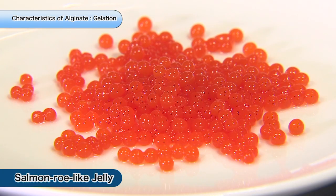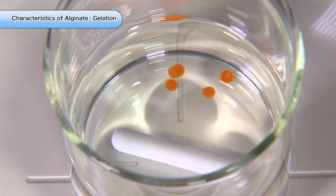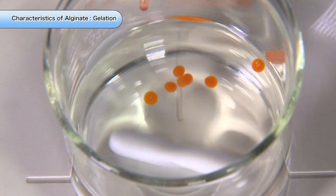One application of this property is jelly formed into spheres similar to salmon roe. So what exactly happens when gelation occurs?